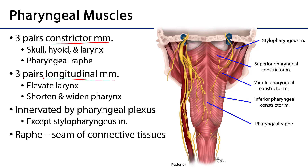In the illustration to the right, we can see the three pairs of constrictor muscles quite well. This is the inferior pharyngeal constrictor muscle, and nestled within it is the middle pharyngeal constrictor muscle, and nestled within that is the superior pharyngeal constrictor muscle. These muscles attach to the skull, the hyoid, and the larynx respectively, and they meet their counterpart along a midline seam called the pharyngeal raphe — that's where the investing fascia of these muscles coalesces to hold them together.